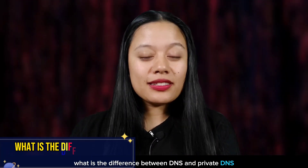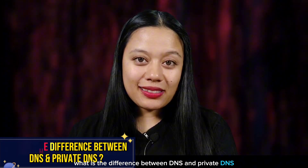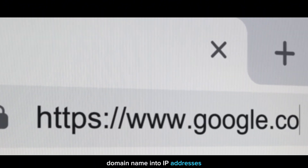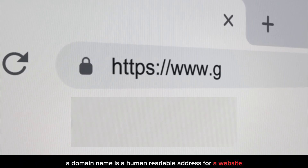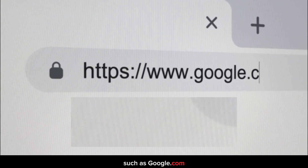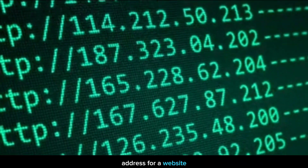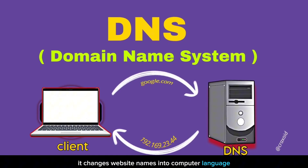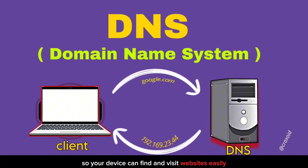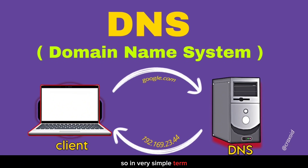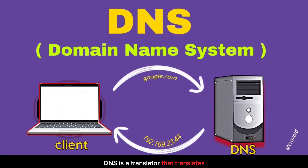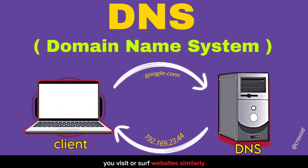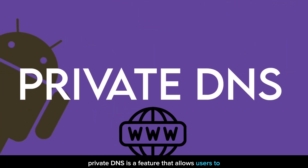The first question is: what is the difference between DNS and private DNS? DNS stands for Domain Name System. It is a system that translates domain names into IP addresses. A domain name is a human-readable address for a website, such as google.com, and an IP address is a machine-readable address for a website. DNS is like an internet translator — it changes website names into computer language so your device can find and visit websites easily. In very simple terms, DNS is a translator that translates domain names into IP addresses.